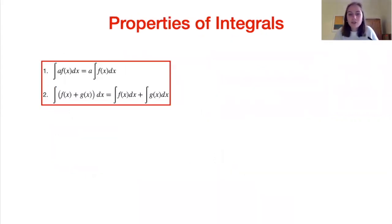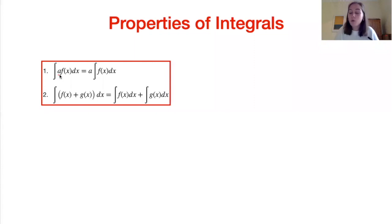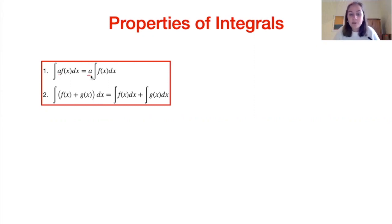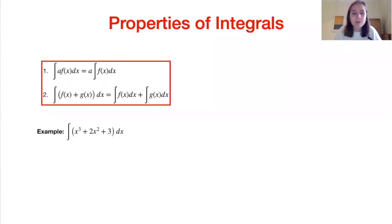So some properties of integrals then. First of all, if we have a function multiplied by some constant number A, what we can do is take that constant number out to the front of the integral — it doesn't change the integral. Second property: if we have two functions summed together in the integral, we can always split that integral up into the sum of the integrals of those different functions.